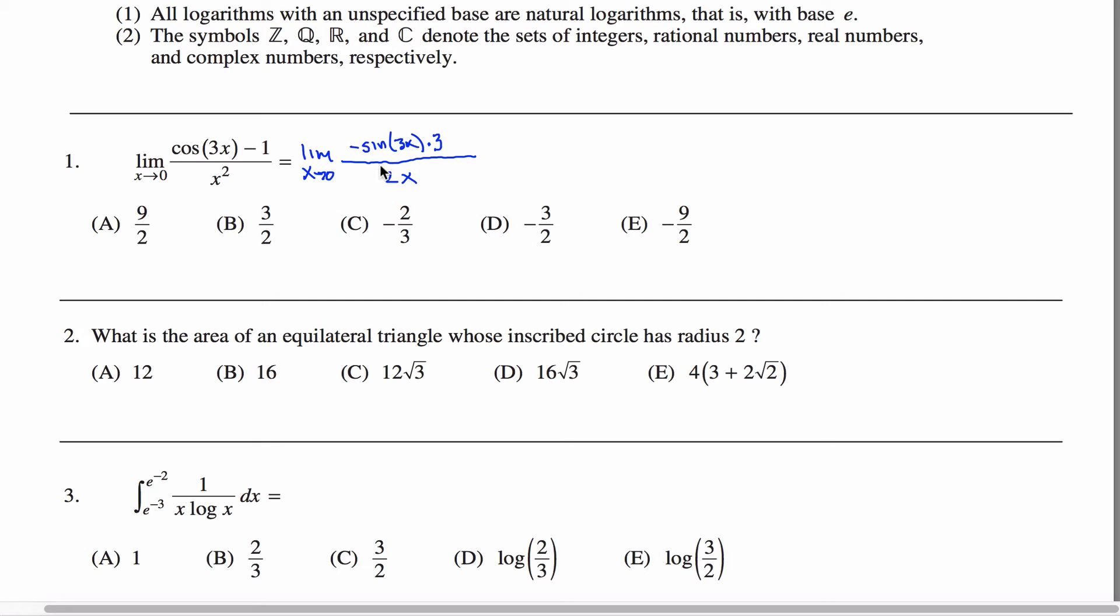You can try to evaluate this limit, change all the x's to zero, and what you'll see is the same thing happens. You get that same indeterminate form, zero over zero. The denominator is pretty obvious that it's zero, but in the numerator, the sine of zero is zero. So when you multiply it by negative three, you're still at zero.